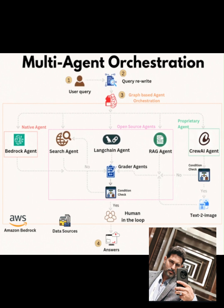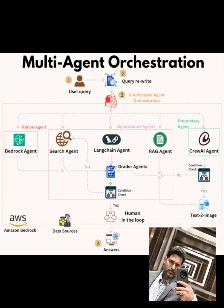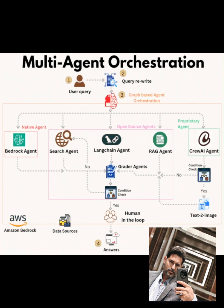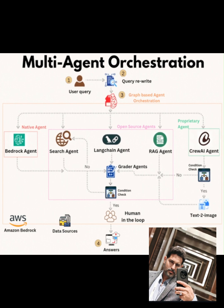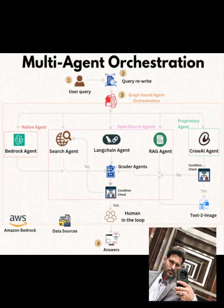First, there's the search agent, which performs web searches to gather external data. It might use an API like SERP API to query the web, fetching recent articles or documentation about AWS Bedrock updates. The results are parsed, often as HTML or JSON, and passed to the next agent.